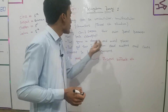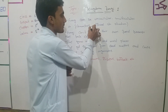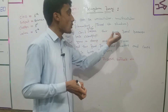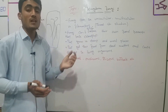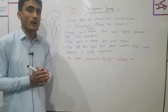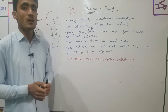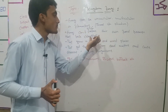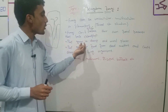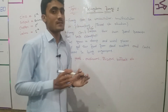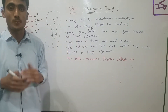Fungi cannot prepare their own food because they lack chlorophyll. Since chlorophyll is absent in fungi, they cannot make food like plants do. They grow in damp and moist places.